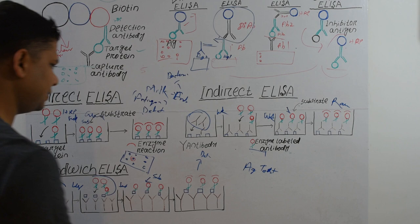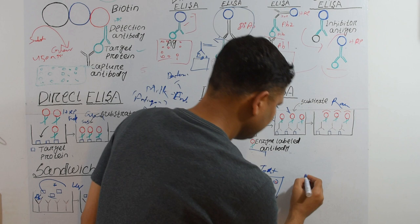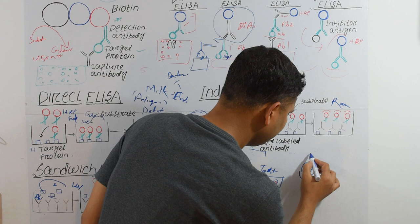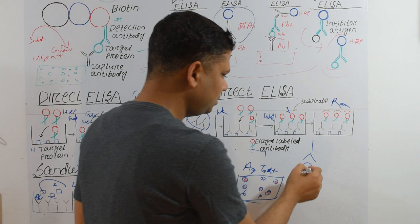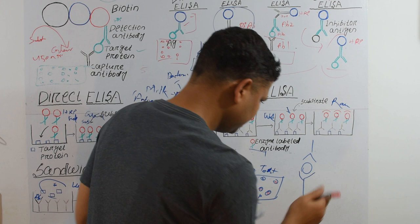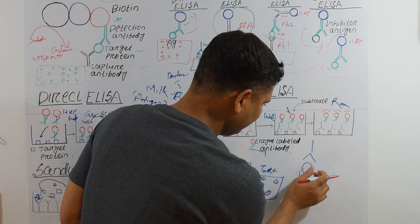There is a key trick in Sandwich ELISA: choosing the antibodies. Since we use two different antibodies, they must detect different epitopes of the antigen. Antibody one detects one epitope and antibody two must detect a different epitope — the same epitope cannot be detected by both.